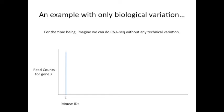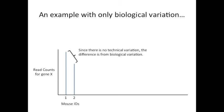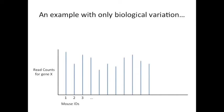Now we've plotted the read count for gene X for our first mouse. Now we've plotted the read counts for our second mouse. Since there is no technical variation, the difference in read counts is only from the biological variation between the two mice. Here are the read counts for a third mouse. And here are the read counts for a bunch of other mice, so many that we haven't even numbered them all.